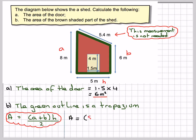So that's going to be equal to 8 plus 6, in brackets, times 5, divided by 2.